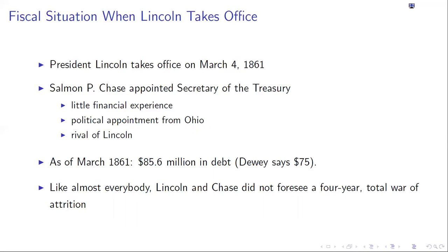Lincoln appoints Salmon P. Chase — a political appointment from Ohio — as Secretary of the Treasury. Chase had relatively little financial experience and was actually a rival of Lincoln, but it was characteristic of Lincoln to appoint political opponents to his cabinet. When Chase takes office, there is about $86 million in debt.